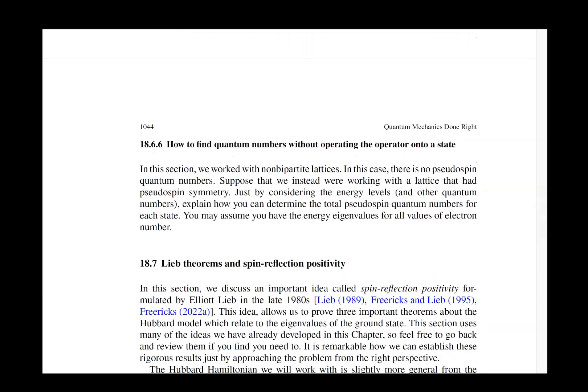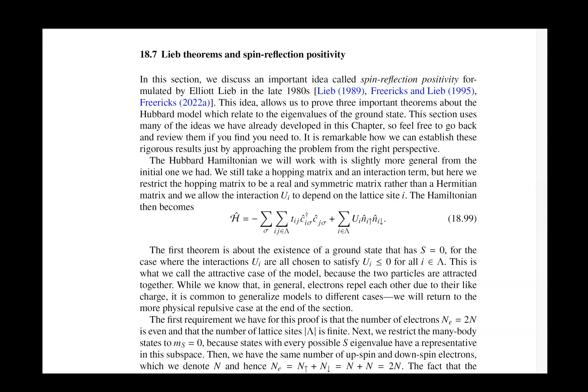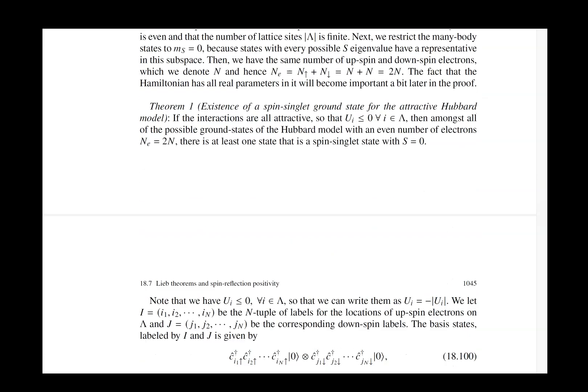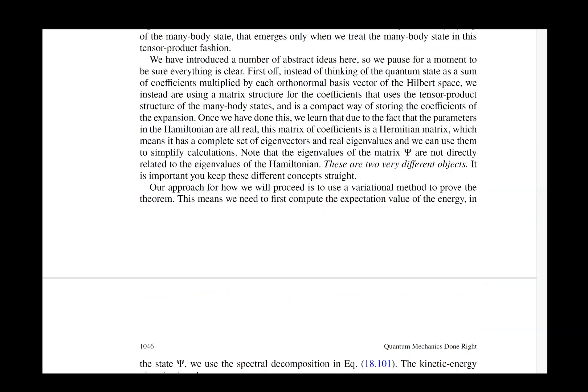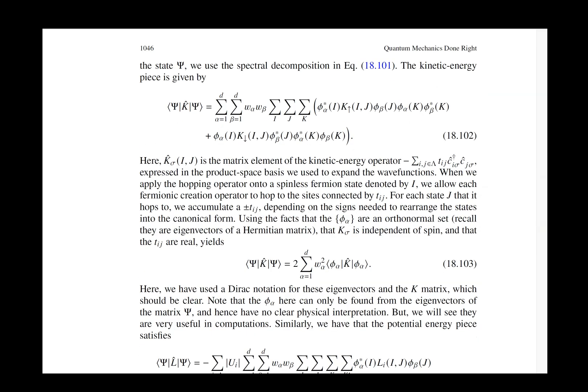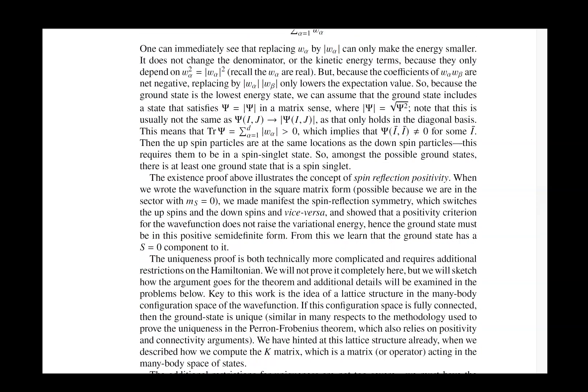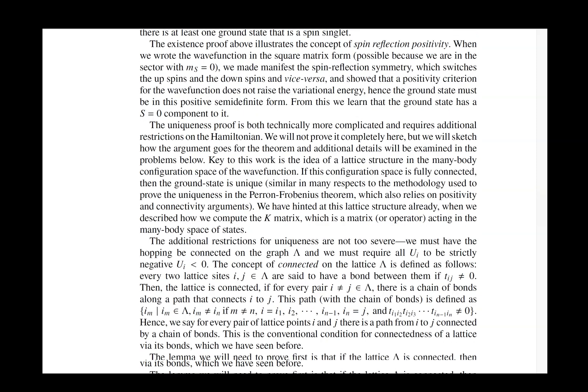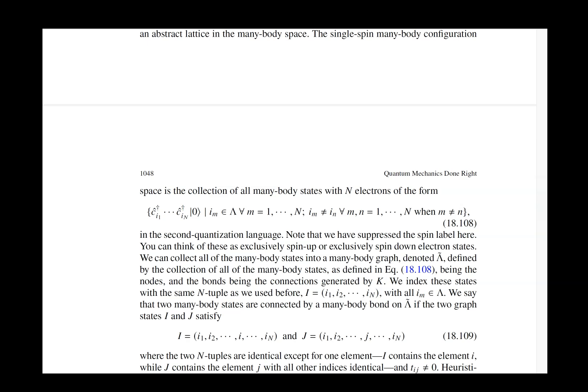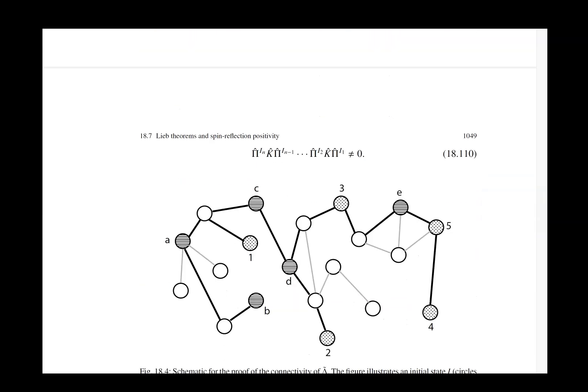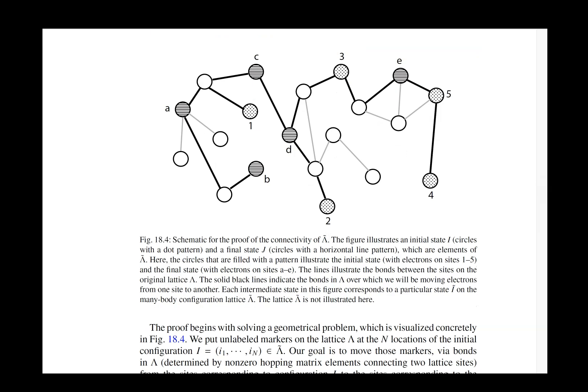Then we look at the Lieb theorems and spin reflection positivity. This is an absolutely beautiful way of thinking about it. Lieb had an interesting construction where he represented the eigenstates of the Hubbard model by matrices, and then by working with properties of the matrices, he could prove results about the Hubbard model. One result is when the Hubbard interaction is actually attractive rather than repulsive, all ground states with an even number of electrons have spin zero. But then what he showed is that at half filling on a bipartite lattice for the repulsive case, the spin was always a singlet and there was never any level crossing in the ground state. That's a super powerful theorem.